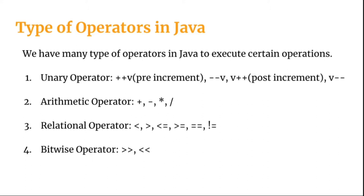Starting with the first type: unary operators. Examples of unary operators include pre-increment and post-increment operators. For example, ++v means v is a variable and we are applying a pre-increment operator on it. Similarly, --v are pre-increment/decrement forms, while v++ and v-- are examples of post-increment and post-decrement operators applied to variables.